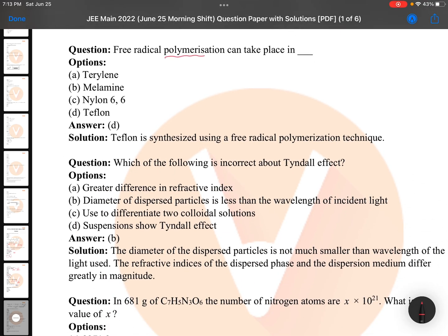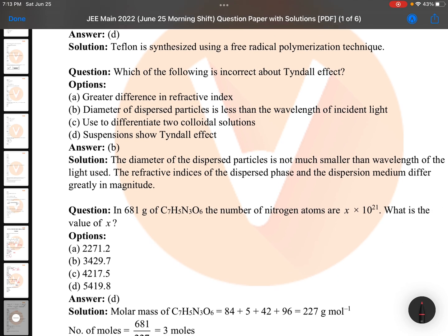Free radical polymerization takes place in Teflon. Again memory based polymer question, not a tough question. He is not asking any particular monomers and all, so you can say it is memory based DC question only. Which of the following is incorrect about Tyndall effect?